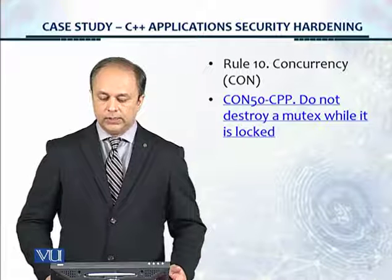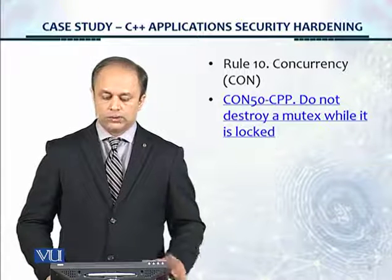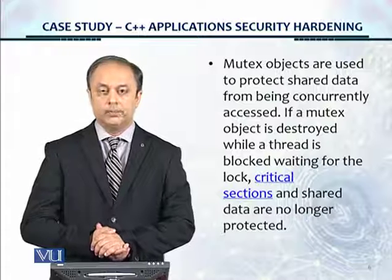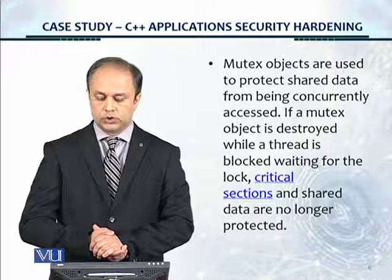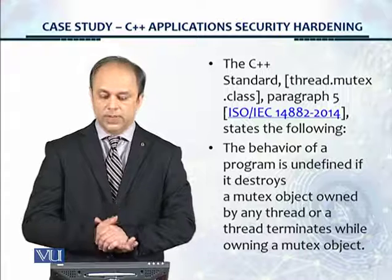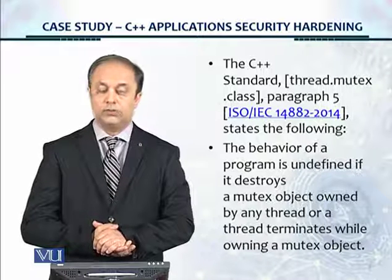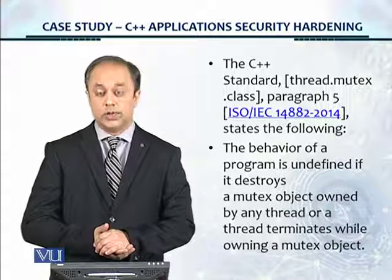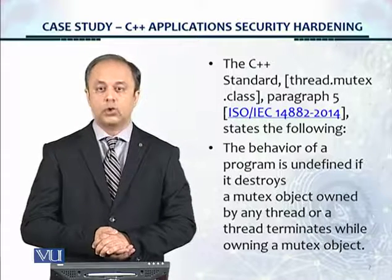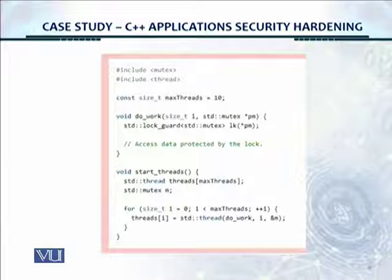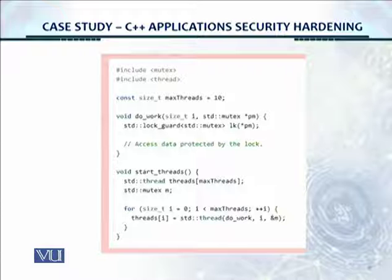There you can see concurrency, and then we have CON50: Do not destroy mutex while it is locked. This is the control we'll actually look at. Mutex objects are used to protect shared data from being concurrently accessed. If a mutex object is destroyed while a thread is blocked waiting for the lock, critical sections and shared data are no longer protected. The C++ standard, thread.mutex.class, paragraph five, from ISO/IEC, states that the behavior of a program is undefined if it destroys a mutex object owned by any thread, or if a thread terminates while owning a mutex object. This is shown in the non-compliant code example with the red border on the screen.